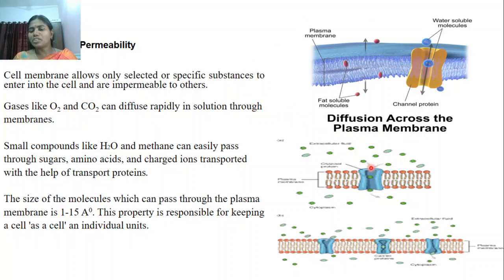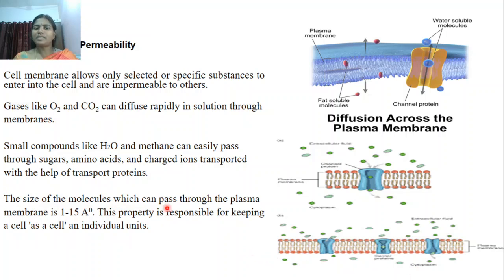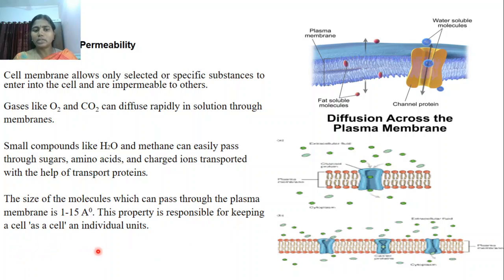Diffusion of gases and active transport or facilitated transport happen because of the membrane proteins present in the bilayer. The size of the molecules which can pass through the plasma membrane is 1 to 15 angstroms, and this property is responsible for keeping the cell as an individual unit.